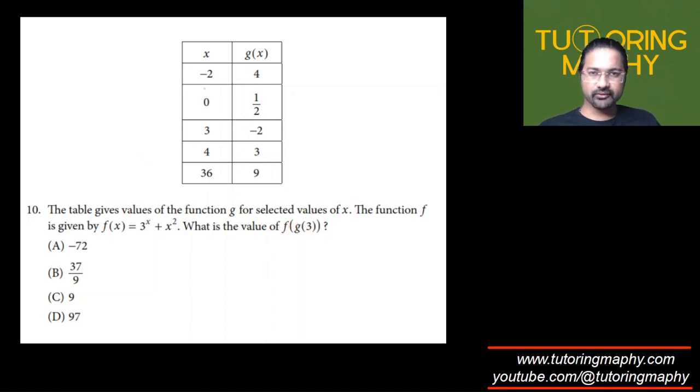What is g(3)? The value of g at x equal to 3. Where is x equal to 3? Right here. What is the value of g corresponding? Negative 2. So can we agree that the value of g(3) is negative 2.